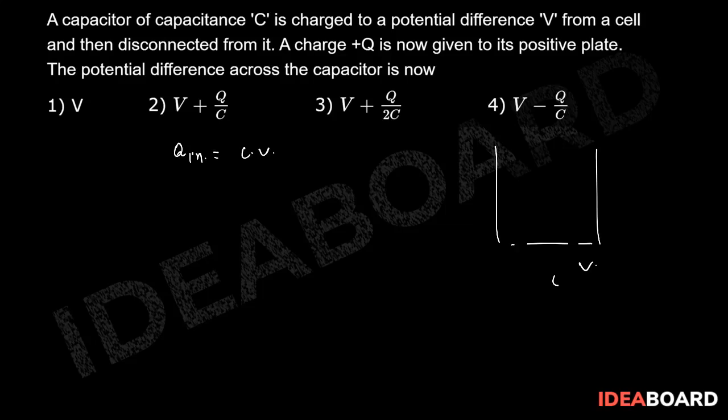Now battery is disconnected as battery is disconnected that shows charge will be conserved. So if charge will be conserved that means Q initial is already there. Now Q initial is already there that means potential of this plate will be V plus V and this will be minus V.